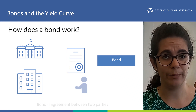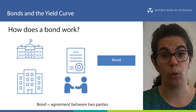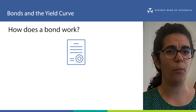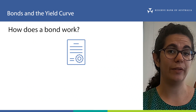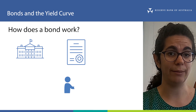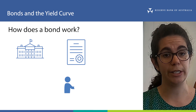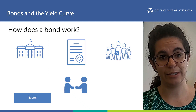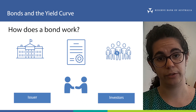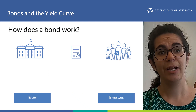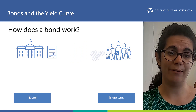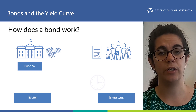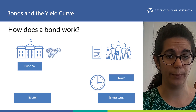A bond is an agreement between two parties — it's actually why we call it a bond, because the agreement creates a bond between them. On one side of this agreement we have the government or business who needed to borrow the money, who we call the issuer of a bond. On the other side we have the lenders or investors, who agree to give the issuer some money, which we call the principal, for a given period of time, which we call the term of the bond.